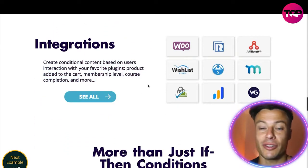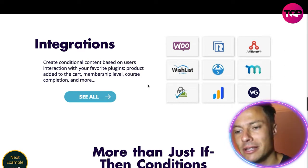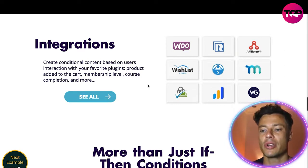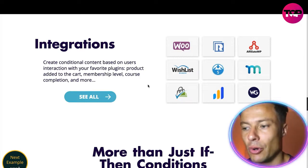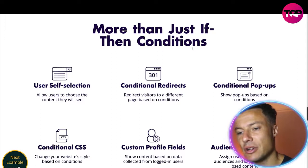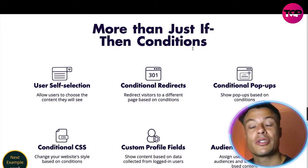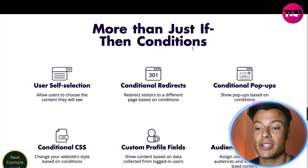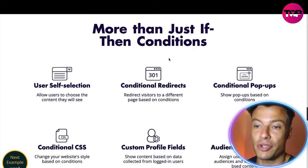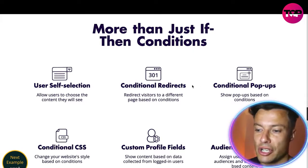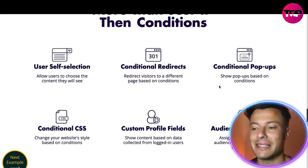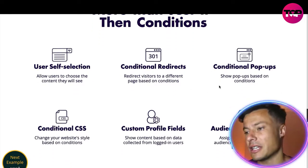Coming down to integrations, you can create conditional content based on users' interactions with your favorite plugins — products added to cart, membership level, course completion, and more. It's not just using conditions to automatically create situations; you can also get users to select different things themselves, allowing them to see different types of content by choosing different options.